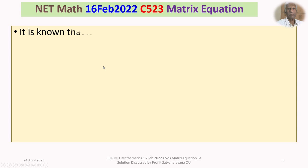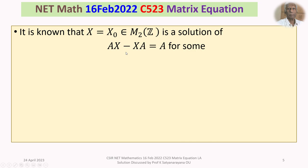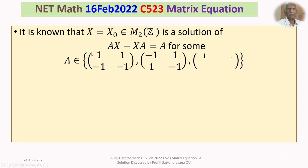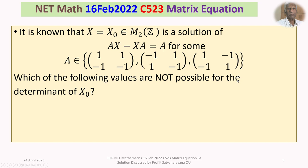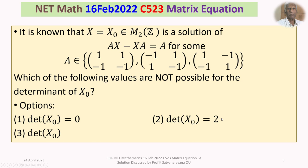The given question is: it is known that X = X₀ ∈ M₂(ℤ) is a solution of AX - XA = A, for some A belonging to the set consisting of three given 2×2 matrices. Which of the following values are not possible for the determinant of X₀? Option 1: det(X₀) = 0. Option 2: det(X₀) = 2. Option 3: det(X₀) = 6. Option 4: det(X₀) = 10.